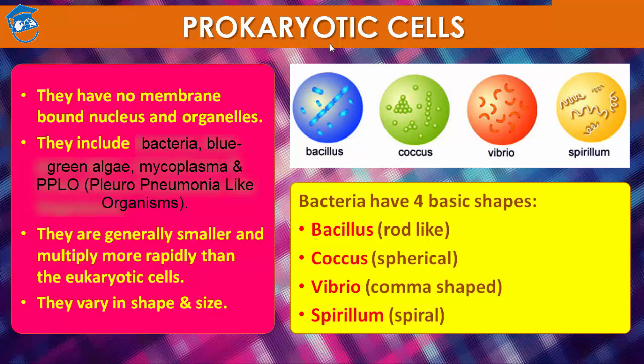A prokaryote cell is represented by bacteria, blue-green algae, mycoplasma, or PPLO — Pleuropneumonia-Like Organisms. They are generally smaller and they multiply more rapidly than eukaryote cells.